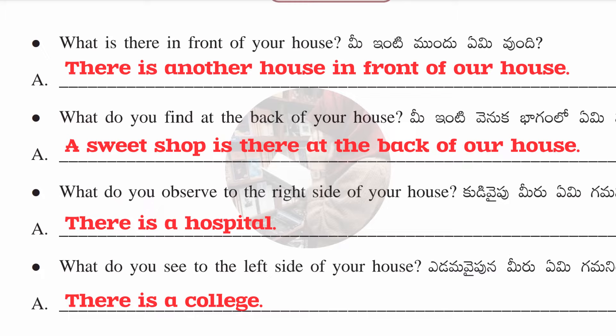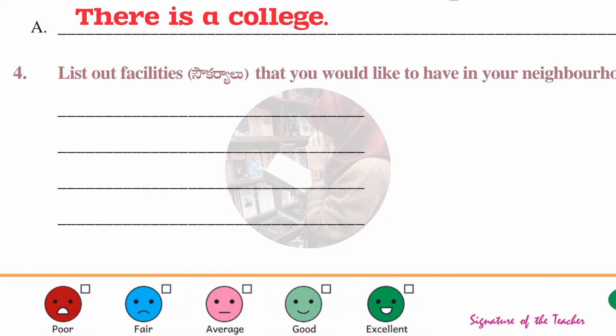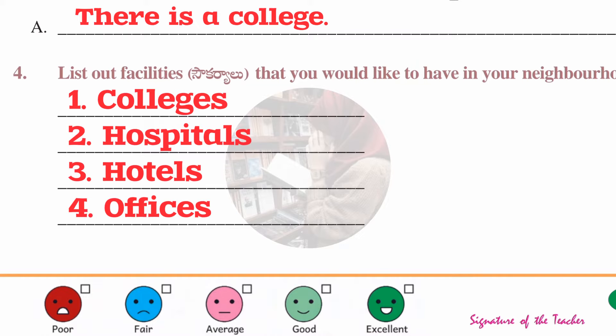Roman number four: list out the facilities you would like to have in your neighborhood. I have picked four: colleges, hospitals, hotels, and offices. You can write the same or change it according to your wish.